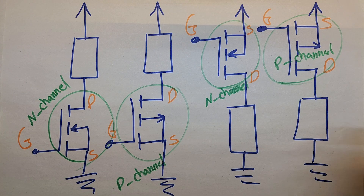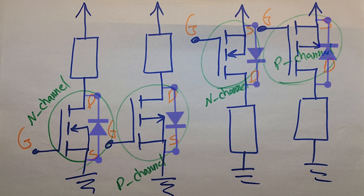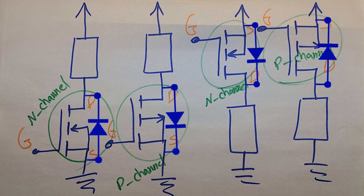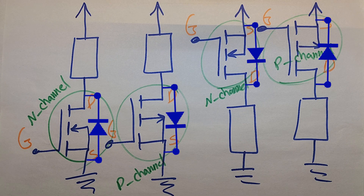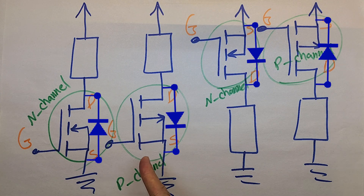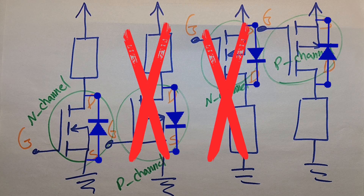Each of these MOSFETs actually has a parasitic diode built right into it. In this video these diodes are ignored to keep things simple. But if we consider them, placing a P-channel upside down on the ground side, or placing an N-channel upside down on the source voltage side, means the MOSFET will always let current flow through it — the load will stay on and never turn off. So these setups are not practical.